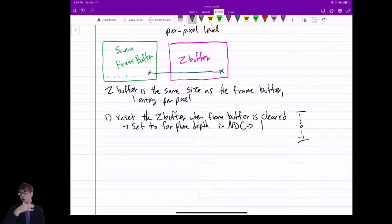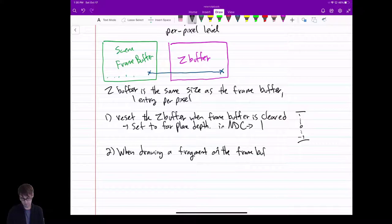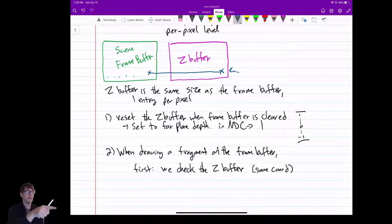And then two, what we do is whenever we're drawing a fragment, let's say we're filling a triangle. We're drawing a fragment on the frame buffer. Before we plot that on the frame buffer, first let's check the Z Buffer at the same coordinate. Remember here, right? You find the coordinate and the frame buffer you want to write to. Oh well, before I write, I better check the Z Buffer. I go over to the Z Buffer, check it.